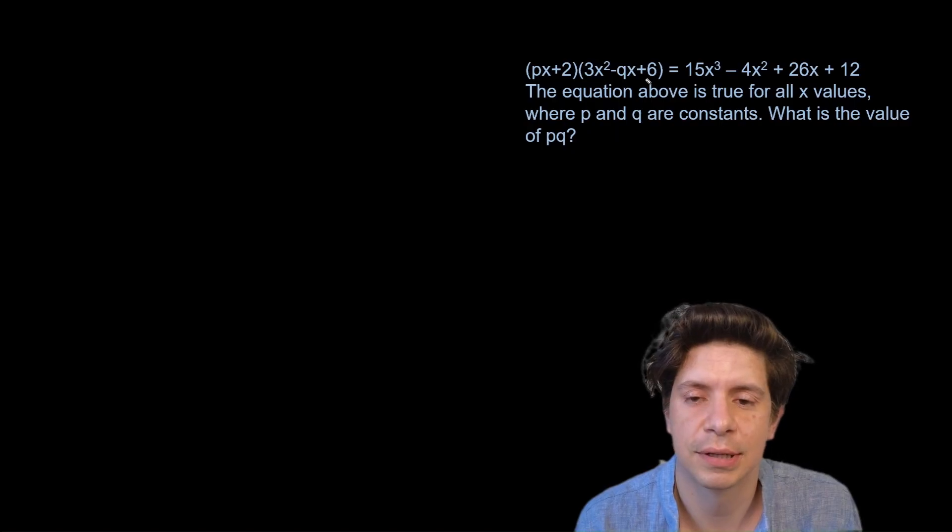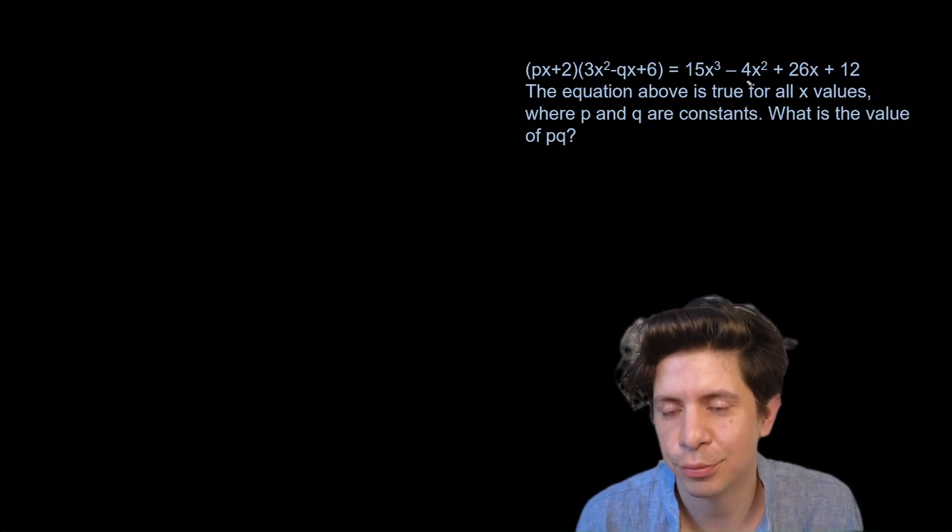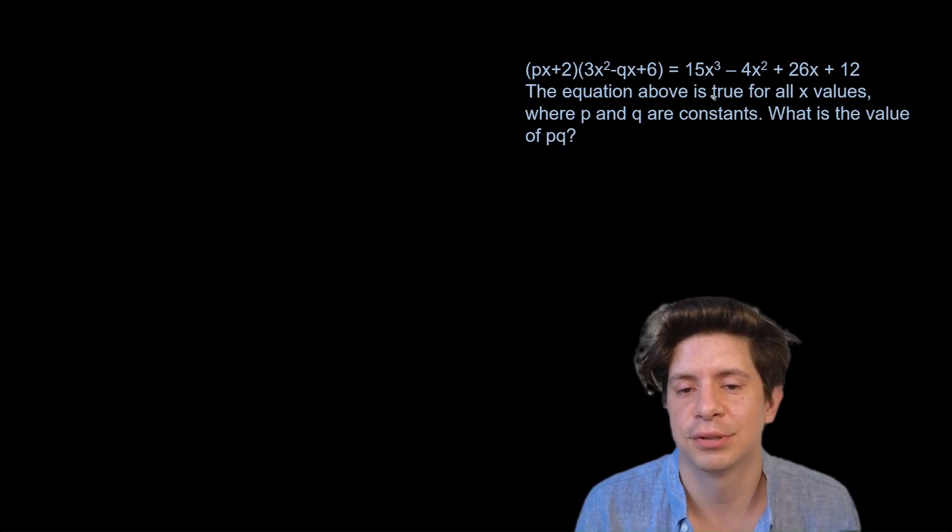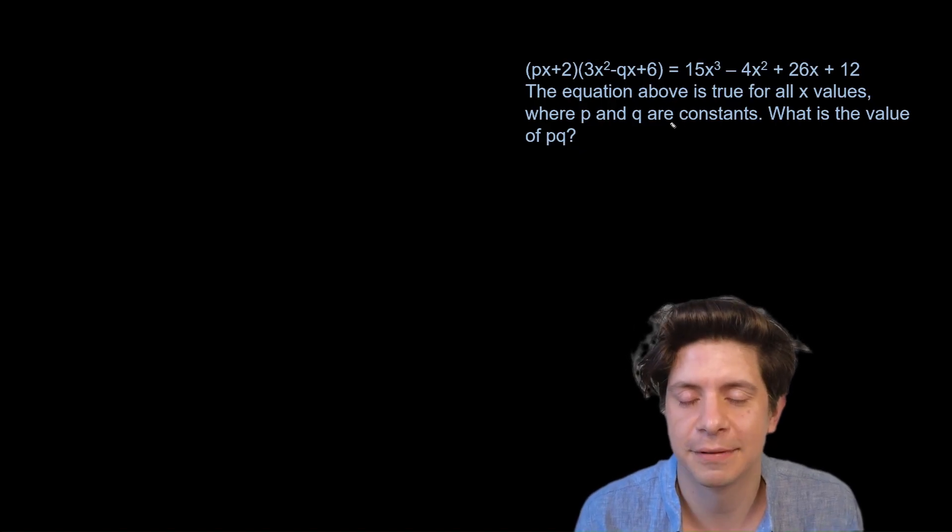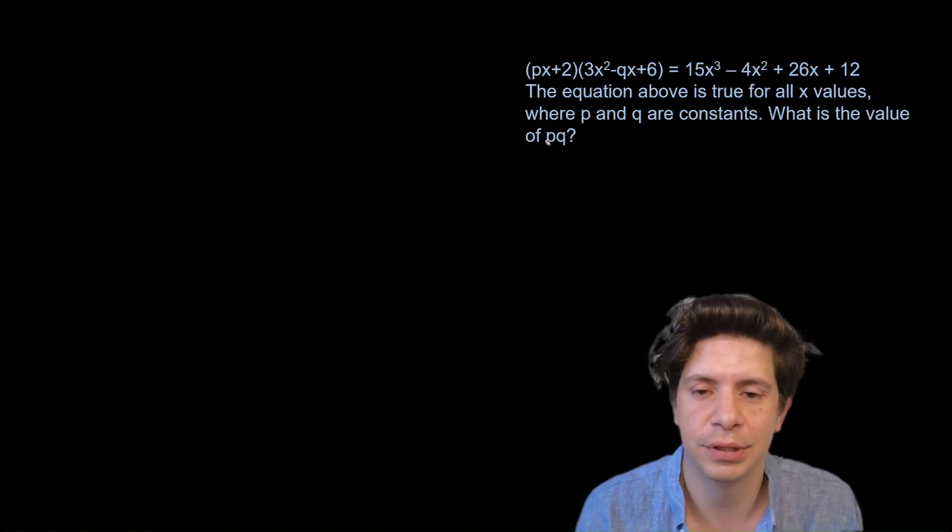So we have this equation: (px+2)(3x²-qx+6) = 15x³ - 4x² + 26x + 12. The equation above is true for all x values where p and q are constants. What is the value of pq?